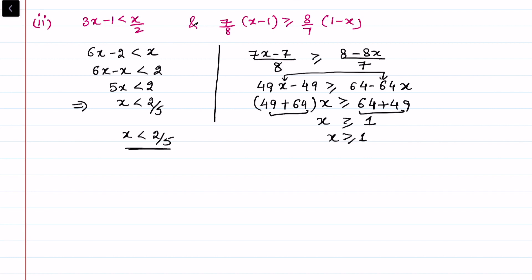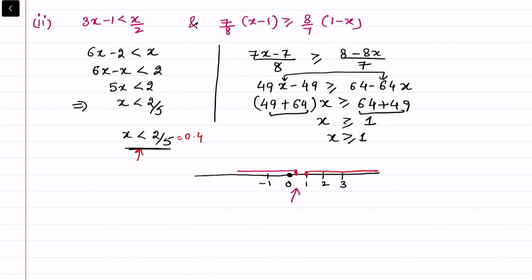We can see from the number line that there is no common region. For example, marking 0, 1, 2, 3 and minus 1: x greater than or equal to 1 lies to the right, while x less than 2 by 5 (which is 0.4) lies to the left of 0.4. There is no overlap, so there is no solution — no x satisfies this system simultaneously.